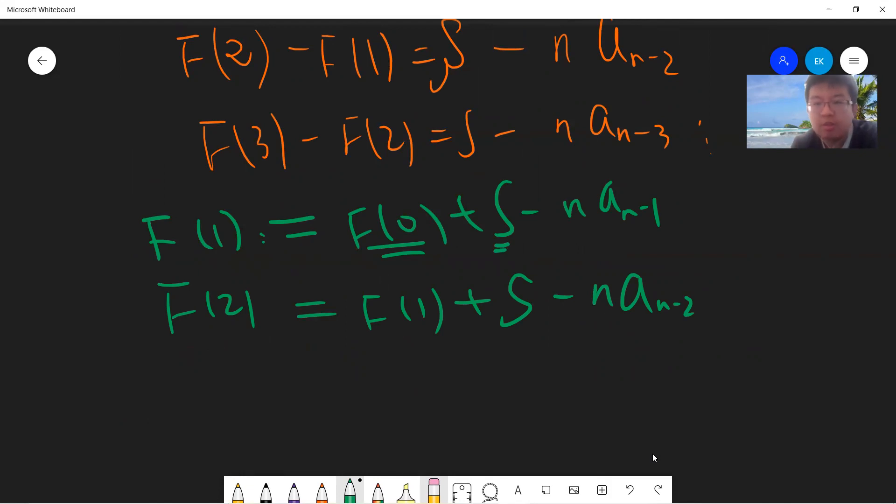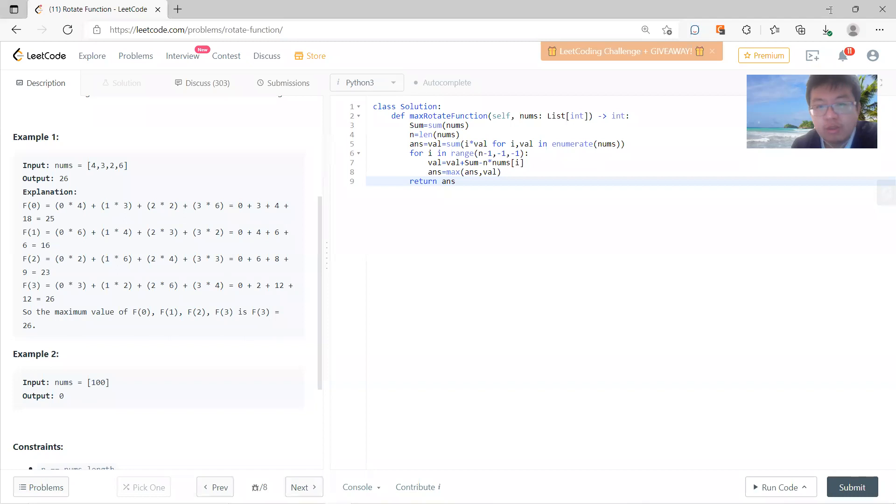You can compute S, which is just a simple update. Then you can initialize your answer to be f(0), and in each step you maximize the answer with respect to f(n).